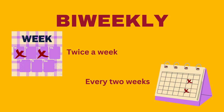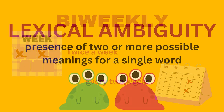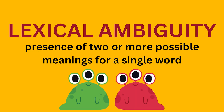So there we have it: bi-weekly has two meanings — one being twice a week, as assumed when prescribing a medication, and the other being every two weeks, as in bi-weekly paychecks. This aspect of language is known as lexical ambiguity, which is the presence of two or more possible meanings for a single word.